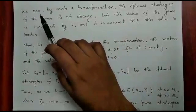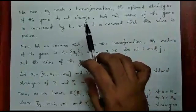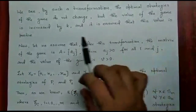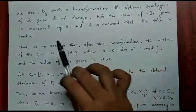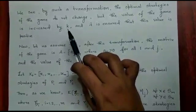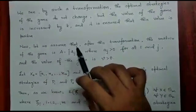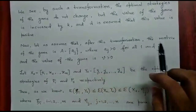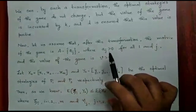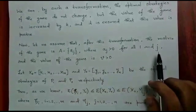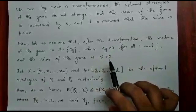Here we see that by such a transformation, the optimal strategies of the game do not change. But the value of the game is increased by K. And it is ensured that the value of the game is positive because we have chosen K such that the matrix A equal to Aij has Aij greater than 0 for all i and for all j, and the value of the game V is of course greater than 0.